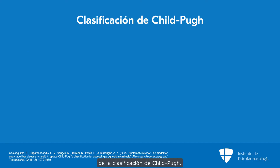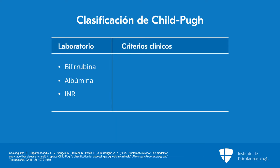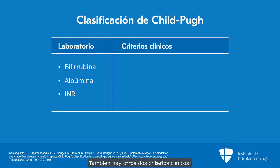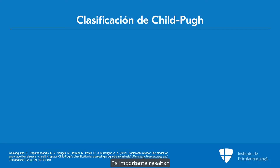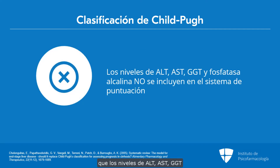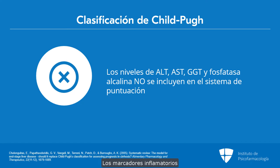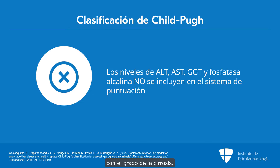Here are the elements of the Child-Pugh rating scale. There are three labs: bilirubin, albumin, and INR. INR is the International Normalized Ratio, which looks at your PT compared to standardized norms and converts it to a ratio. There are also two clinical criteria: ascites and hepatic encephalopathy. It's important to notice that ALT, AST, GGT, and ALK phos are not part of the scoring system. The inflammatory markers have nothing to do with cirrhosis — it's the ability to make proteins and the clearance of bilirubin that best correlates with the extent of cirrhosis.